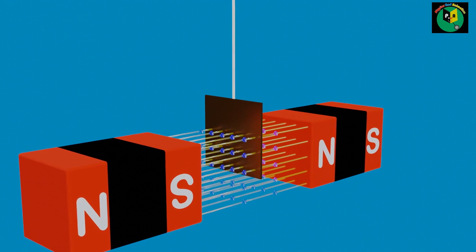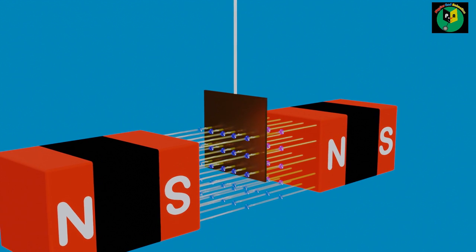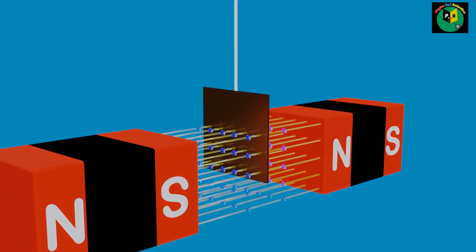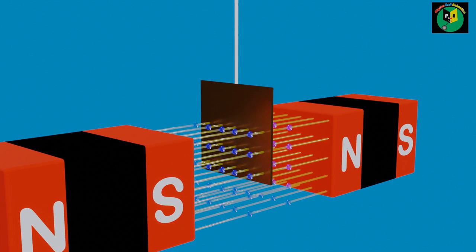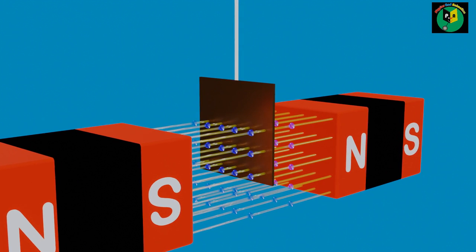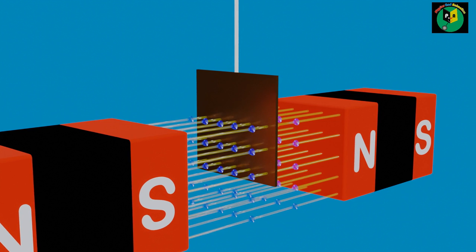Such opposition keeps acting on the oscillating plate and forces it to stop. This type of reduction in oscillation over time is called damping.